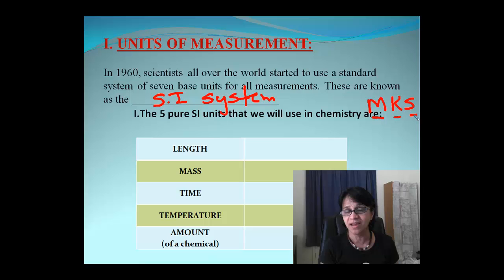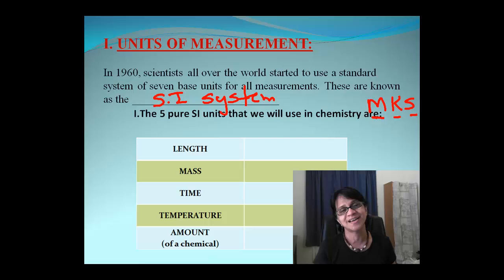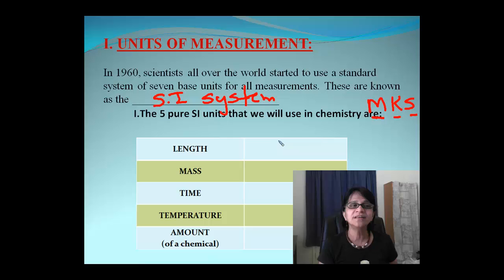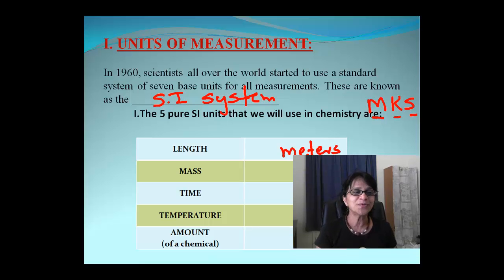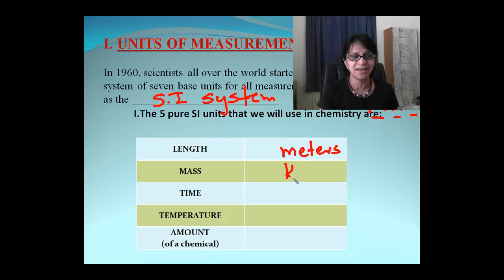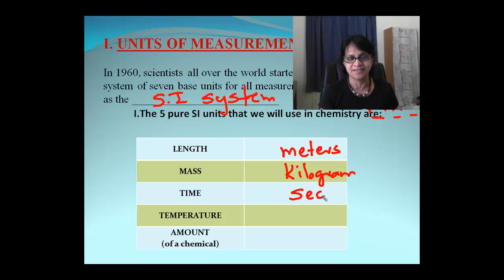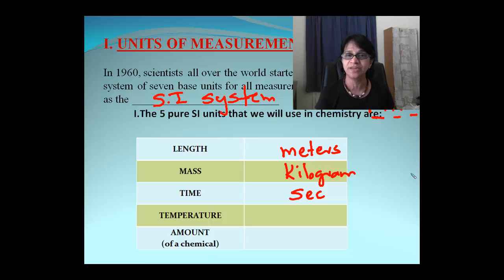There is a hint with MKS because M stands for meter, K stands for kilo, and S stands for second. So the unit for length in the SI system is meters — not centimeters, not inches, but meters. The unit for mass is kilogram, not gram as you might consider. And the unit for time is seconds. We also use minutes and hours, but for the SI system it's only seconds.